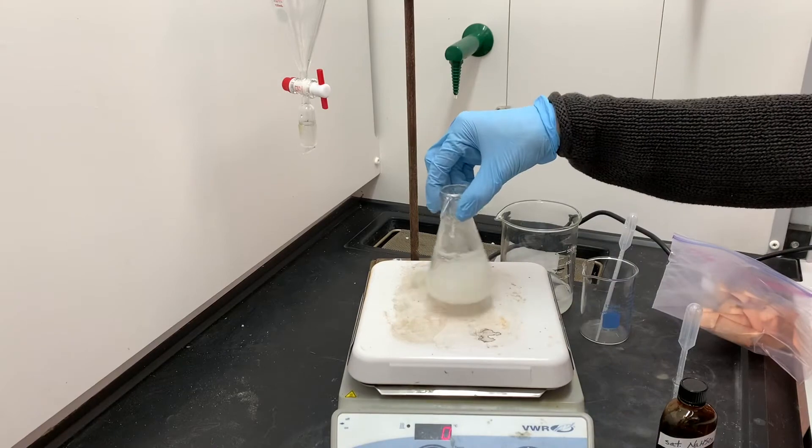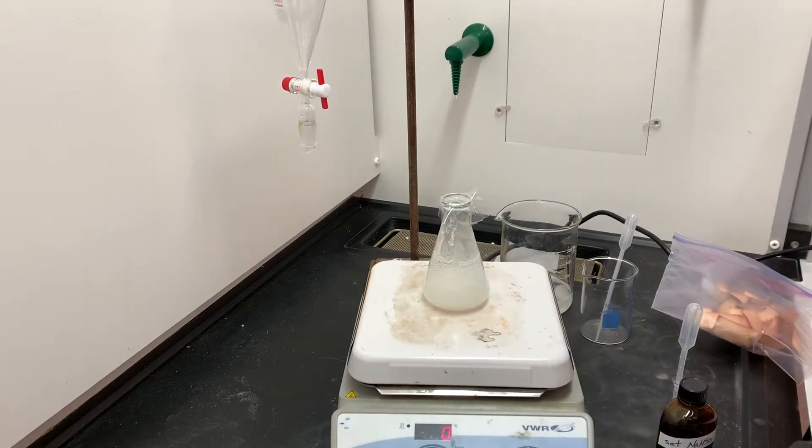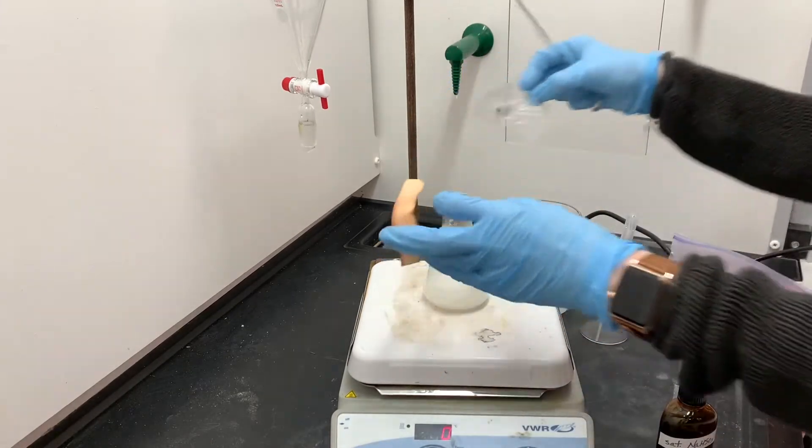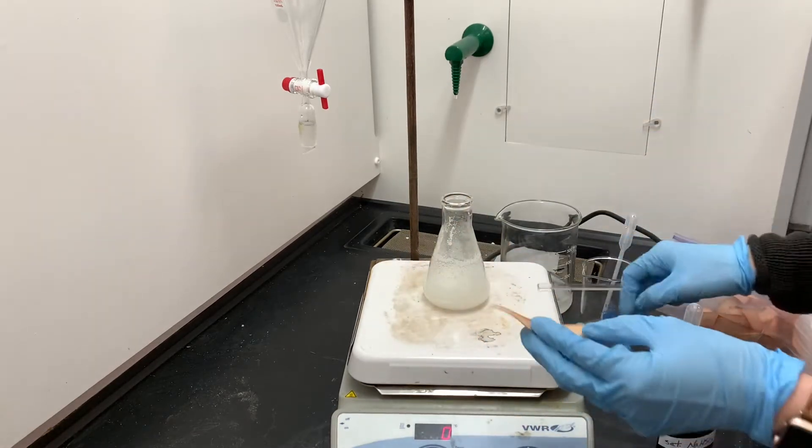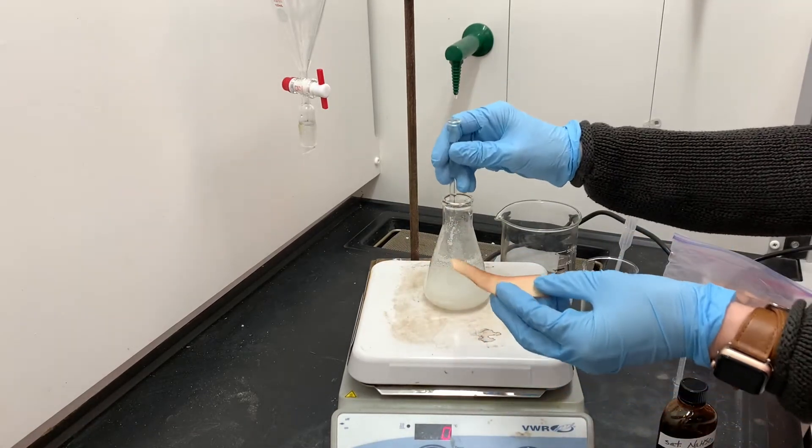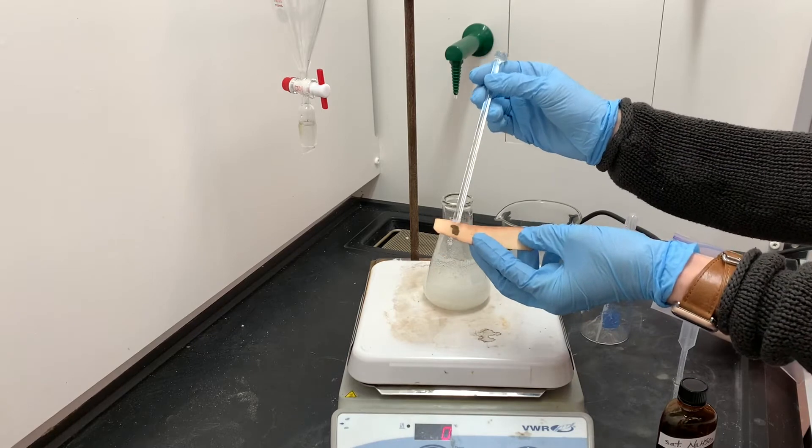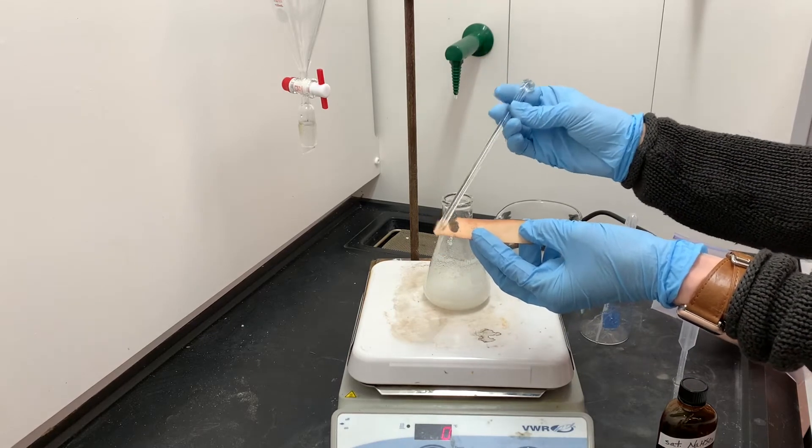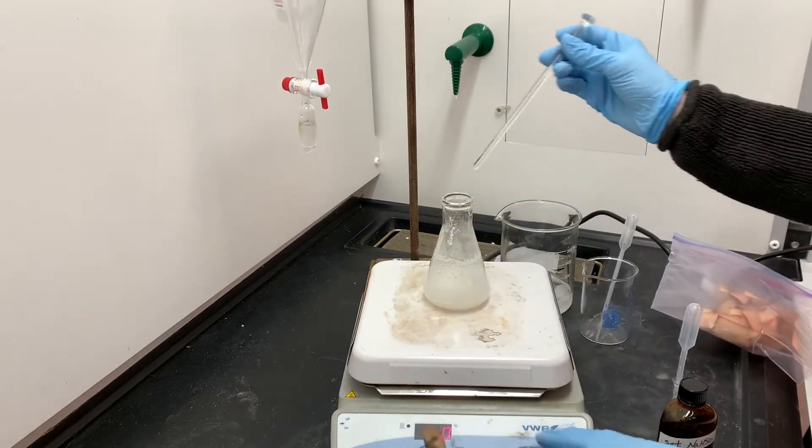It's the end of our 30-minute reaction period. We're going to do one final starch iodide test. This time however, we are testing to make sure that we have reacted all of the bleach. We do not want any bleach present, which means that we do not want this blue color that we're getting on the starch iodide paper.